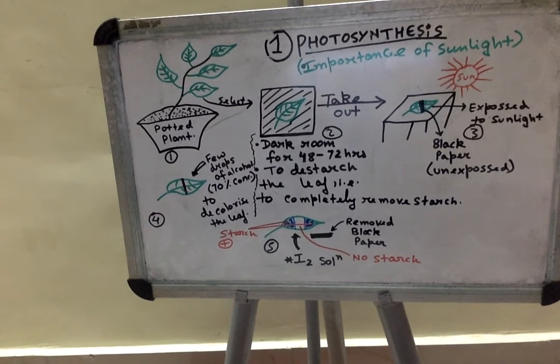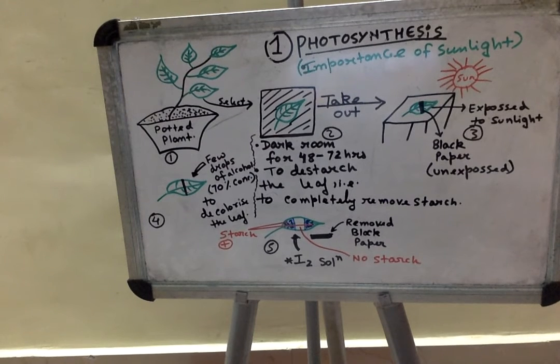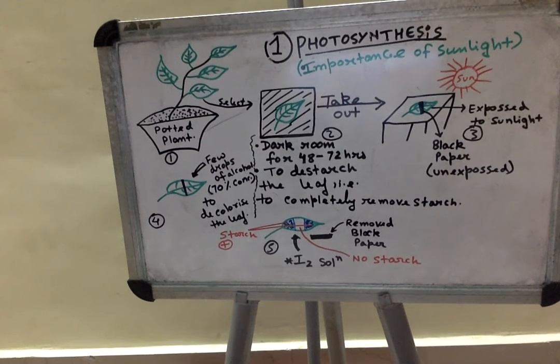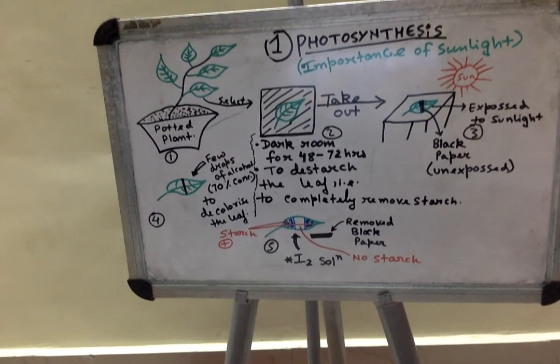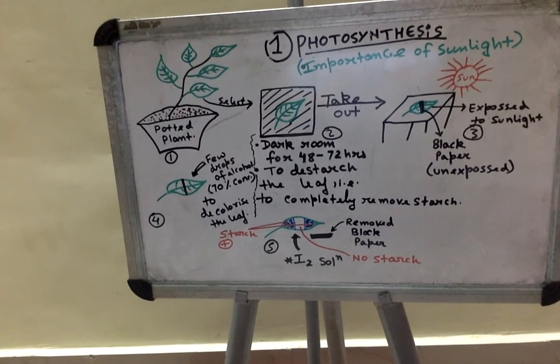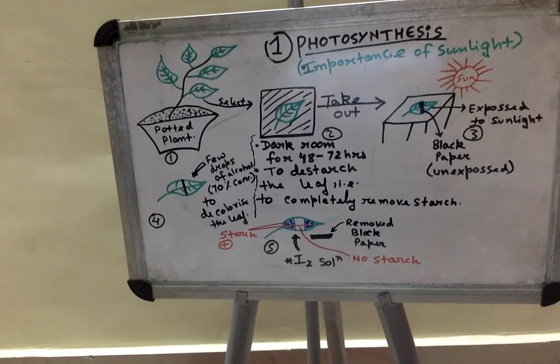So in this experiment it is clear that light is very much important during photosynthesis to synthesize starch or rather glucose. I hope this is very helpful and please watch my next videos to clear your doubts. Thank you.